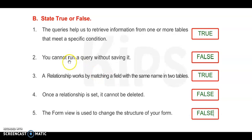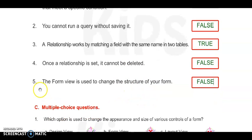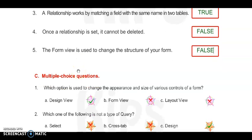These eight fillers you have to do in your copy. Now move on to next exercise, it is True or False. Number one: Queries help us to retrieve information from one or more tables that meet a specific condition. It is True. Number two: You cannot run a query without saving it. It is False, we can run. Number three: Relationship works by matching a field with the same name in two tables. It is True. Number four: Once a relationship is set, it cannot be deleted. It is False, we can delete. Number five: The form view is used to change the structure of your form. It is False.